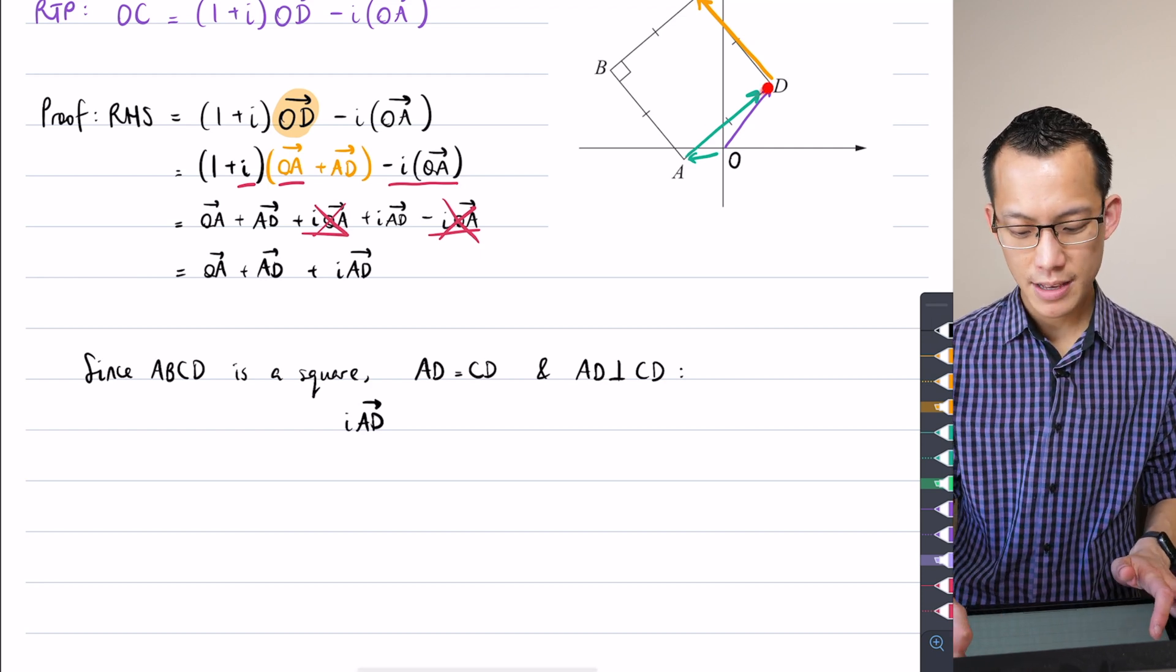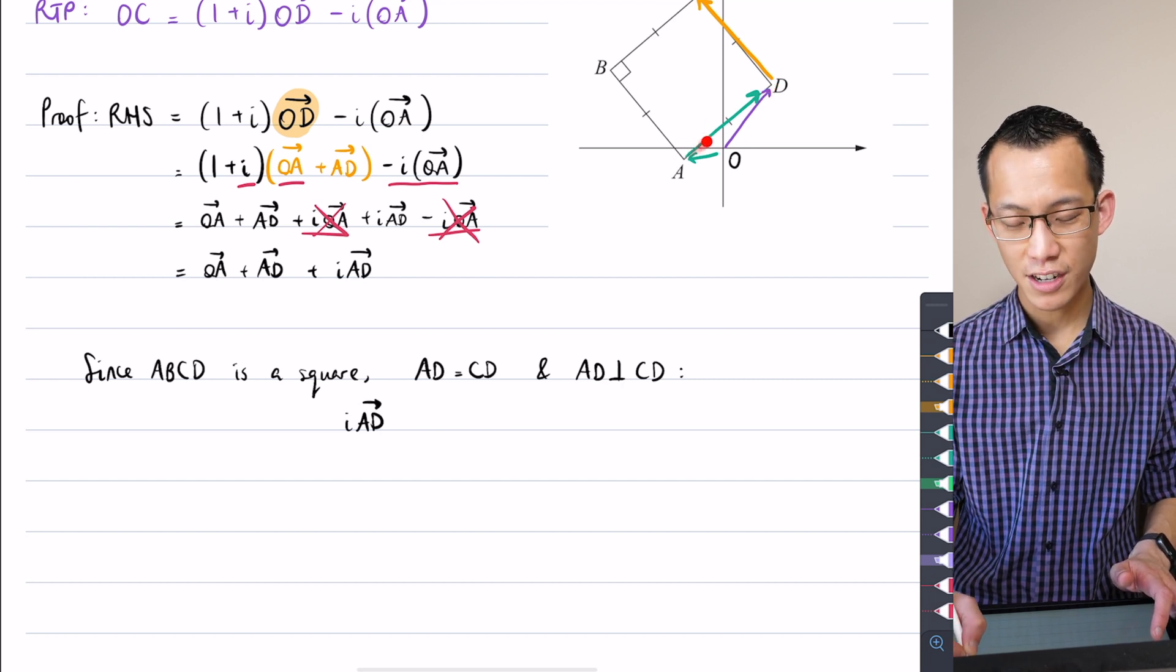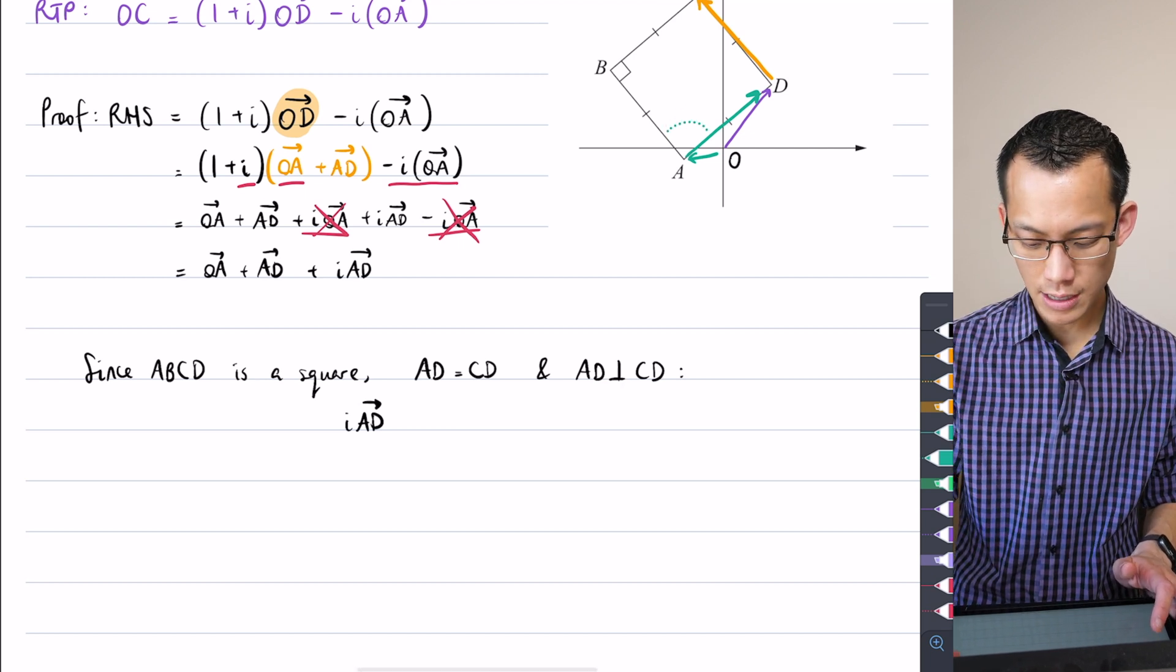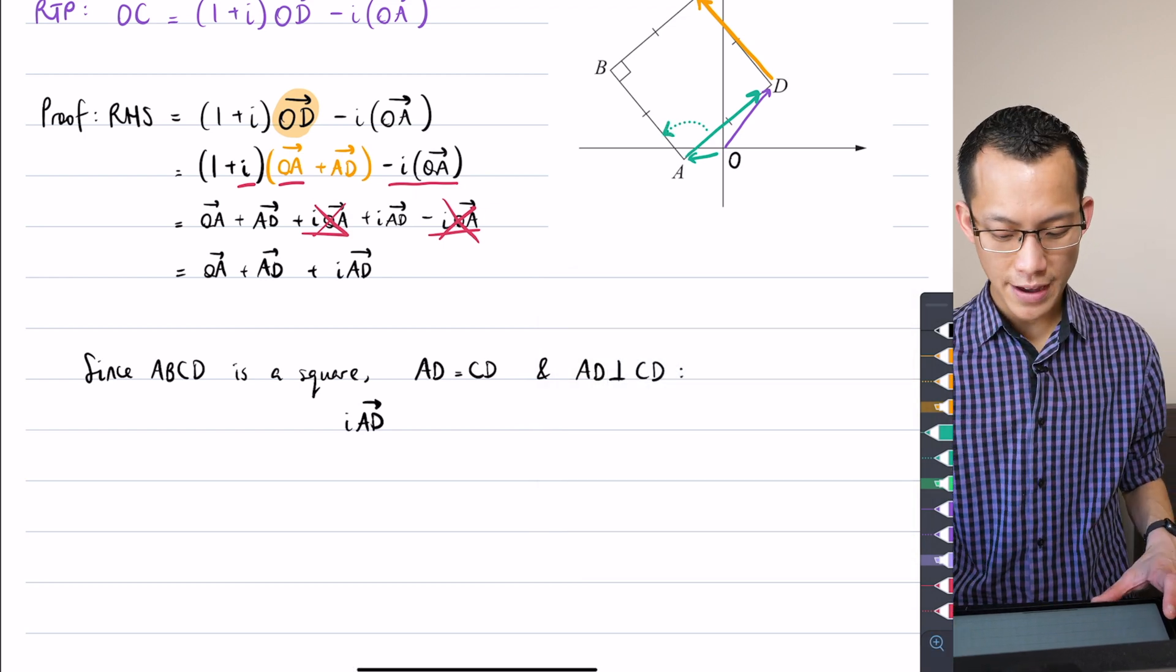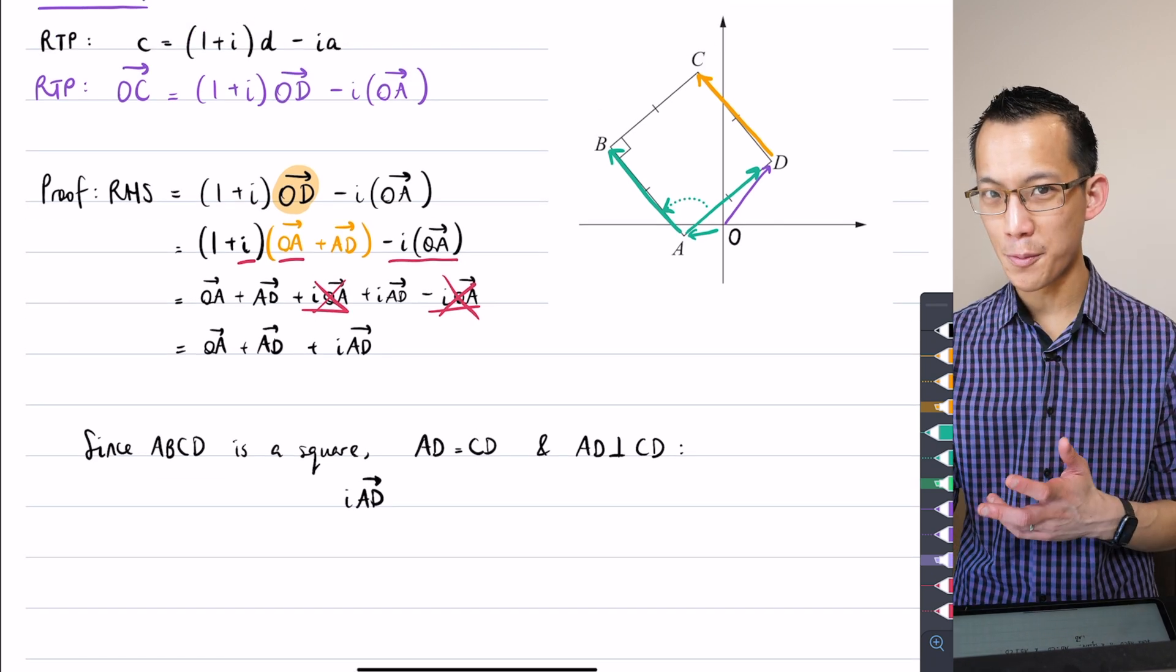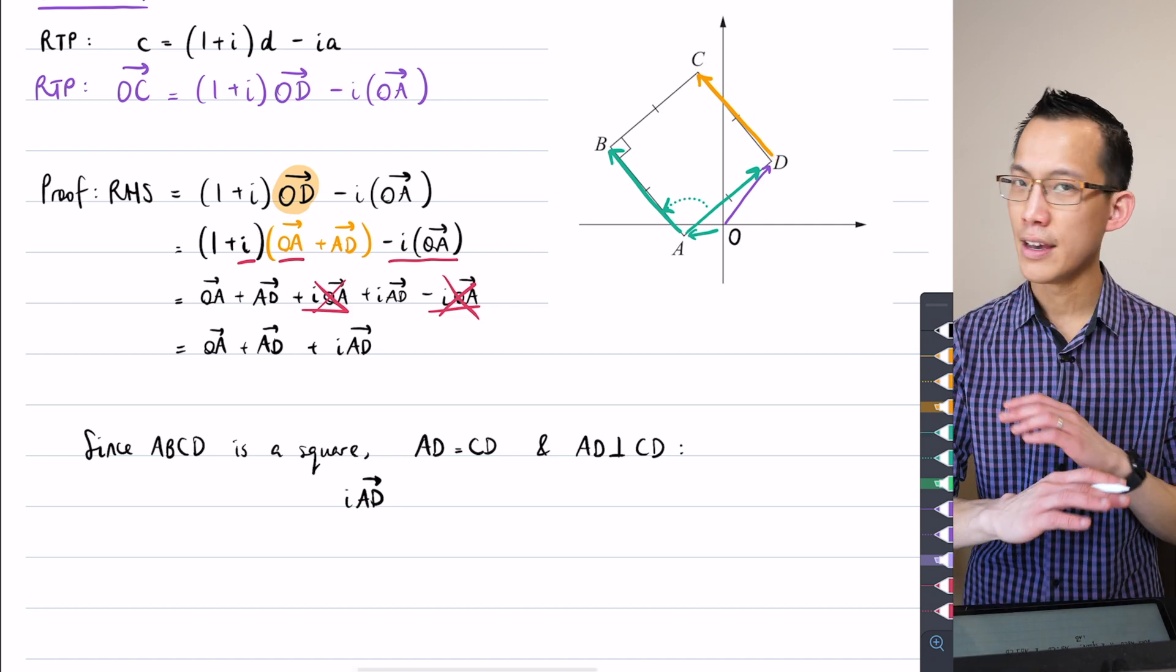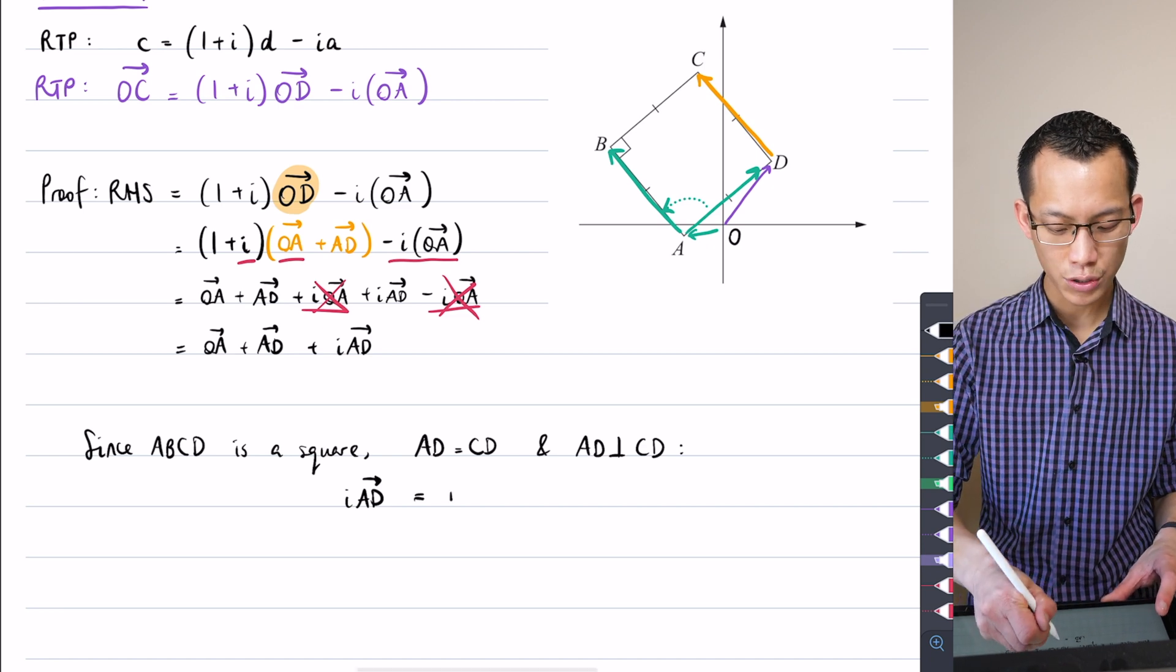Here is vector AD. So if you rotate it by 90 degrees anticlockwise, then you're going to get a vector like, in this case, it's vector AB. But vector AB starting from A going to B is the same as starting from D and going to C. Same direction, same magnitude. So these two vectors are equal to each other.